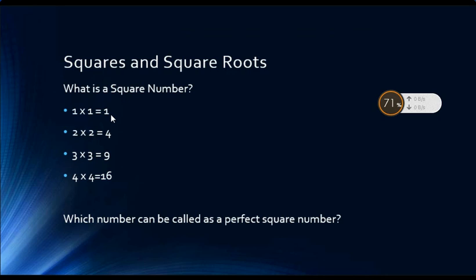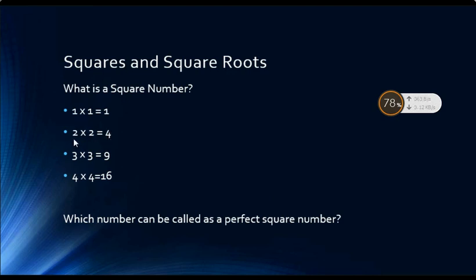What are natural numbers? All the counting numbers 1, 2, 3, 4 till infinity are natural numbers. So, all positive numbers starting from 1 till infinity are called natural numbers. And when you multiply any natural number with itself, the product that we get is called the square of that natural number.